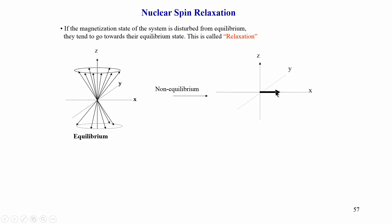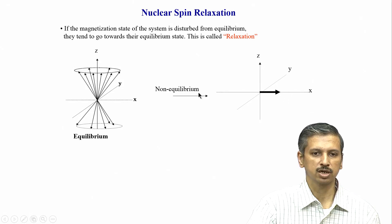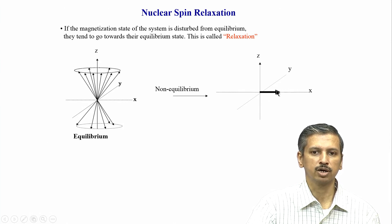This is a non-equilibrium situation: the spins have been brought from the z-axis to the x-y plane. Once the pulse is removed, the system must return to equilibrium. The net magnetization vector has to come back to the z-axis. Additionally, when a pulse is applied, all the spins become bunched together in phase — we call this coherence. When the pulse is removed, the phases must return to a random situation around the cone — the spins must decohere or de-phase.